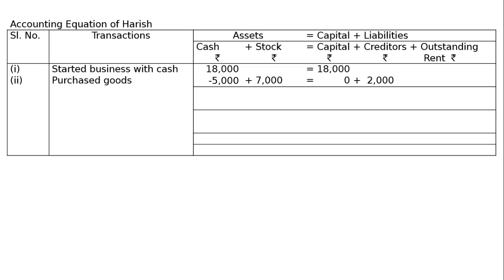When there are two transactions, we add them to find the new equation. That gives us ₹13,000 + ₹7,000 = ₹18,000 + ₹2,000, i.e., ₹20,000 on both sides.